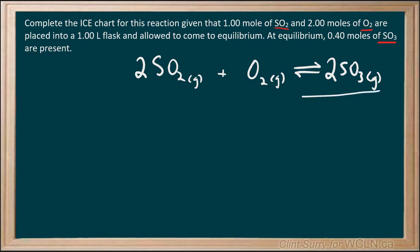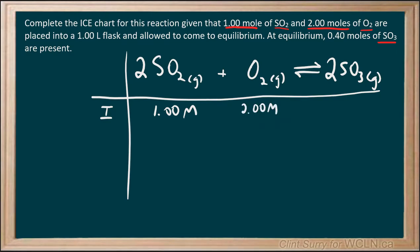We're going to set up an ICE table just like we did in the introduction and write down our initial conditions. Again we're fortunate here it's a 1 liter flask so we can see that we have 1 mole of sulfur dioxide and 2 moles of oxygen. The 1 mole divided by 1 liter gives us a 1.00 molar amount of sulfur dioxide. We've got a 2.00 molar of oxygen. Remember that comes from the moles divided by the volume of the flask.